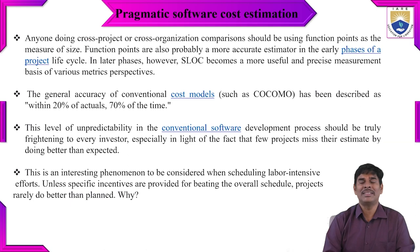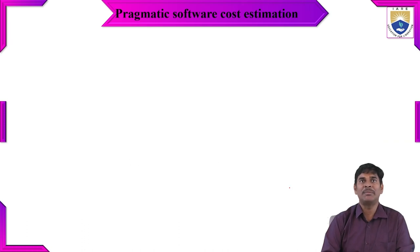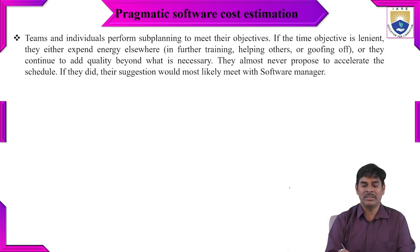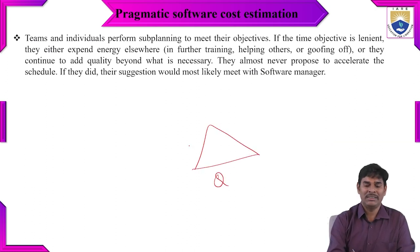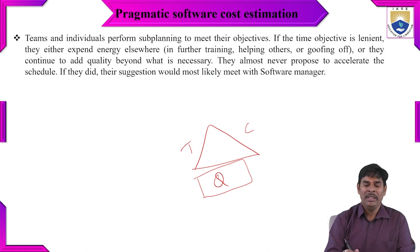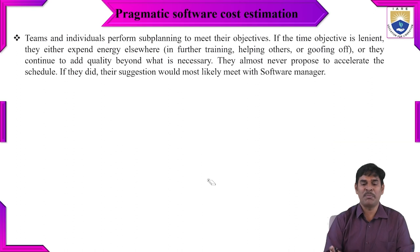Projects rarely do better than time estimates. Incentives should be given based on overtime so that projects can be completed within the stipulated time. Teams and individuals perform to meet their objectives; if time objectives are met early, they either expend energy helping others or continue adding quality beyond what is necessary. The project requires three key checks: quality, time, and cost — these should never be compromised, and the schedule should not be accelerated carelessly.